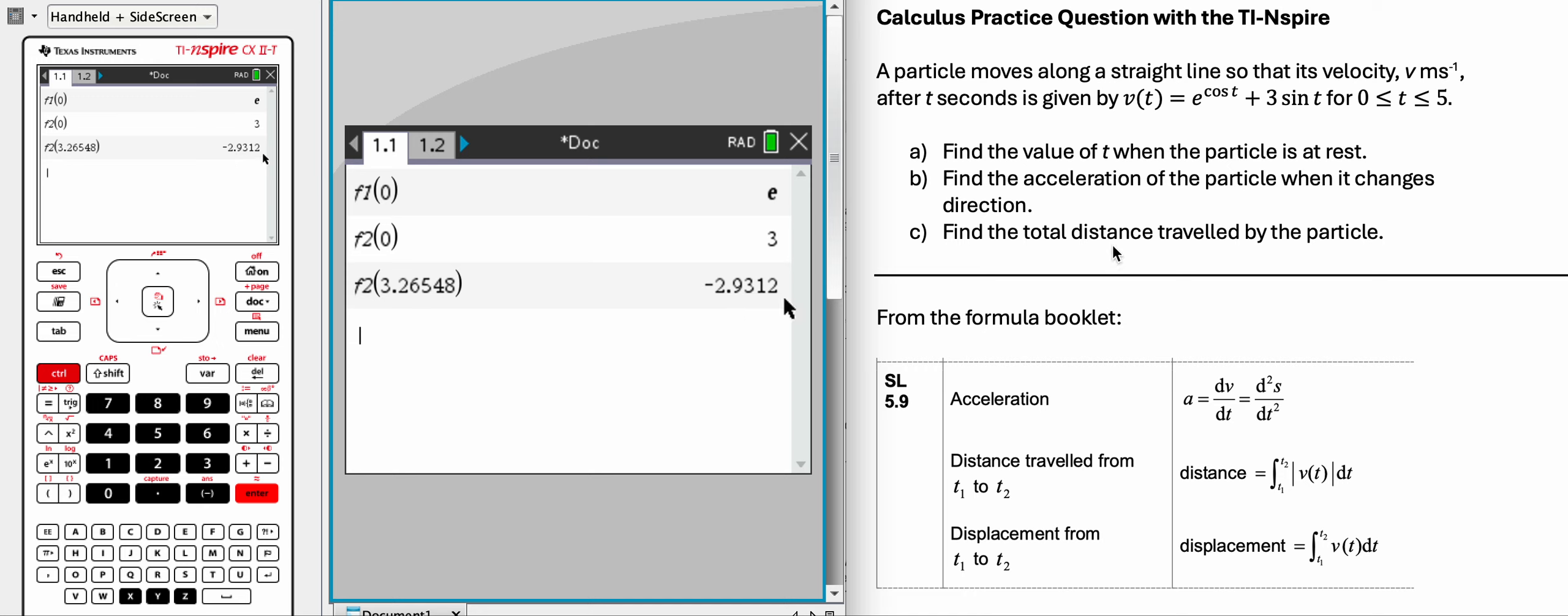So part C, find the total distance traveled by the particle. Now notice that there's a formula right here, and notice the difference between distance and displacement. Distance, you need to use the absolute value.